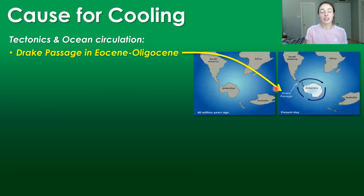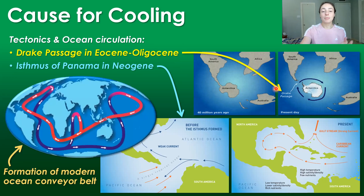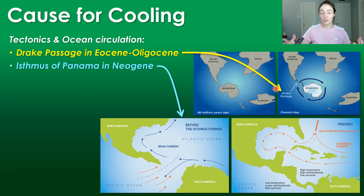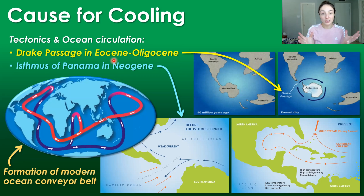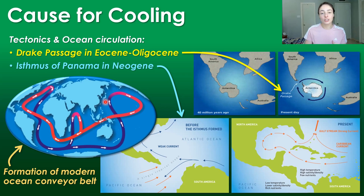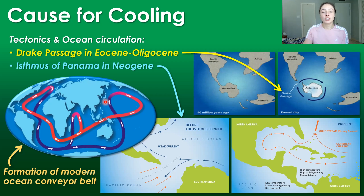I talk a lot more about these tectonic events and this cooling due to Antarctica's isolation in my Paleogene climate video. In terms of the more recent northern hemisphere cooling that brought on the modern ice age interglacial cycle-type climate, the connection of North and South America during the Neogene allowed the completion of the modern oceanic conveyor belt, which represents the thermohaline circulation of the ocean —